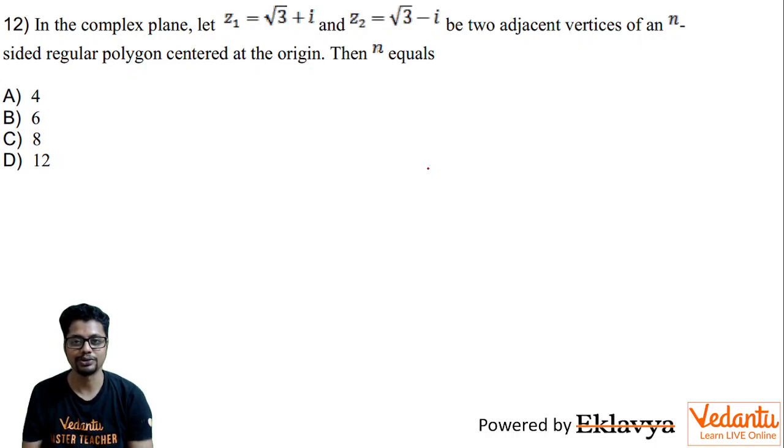Four options, single correct type question. So here in the complex plane or the argent plane, there are two adjacent vertices of an N-sided regular polygon have been given, and we have to find out what this N is, that means how many sides would be there of that regular polygon.